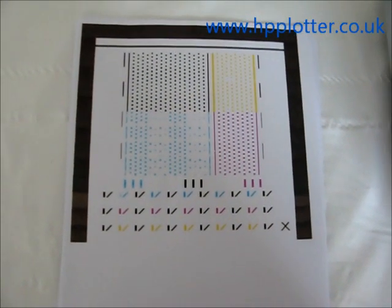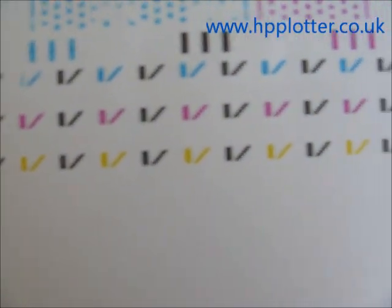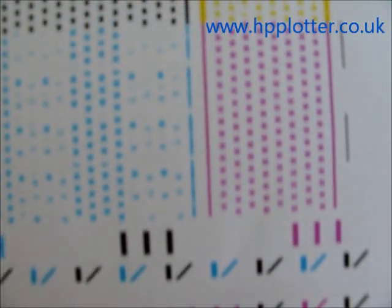The DesignJet has now produced three print head alignment pages and failed all of them. The yellow has actually improved quite significantly, so that may be alright, just where it started to flow again. A little bit missing there.